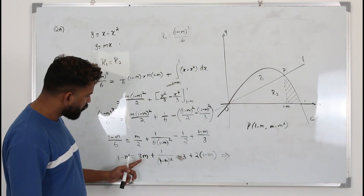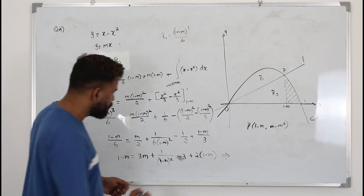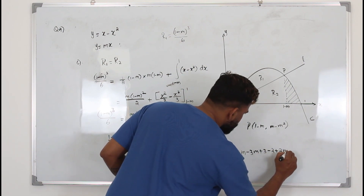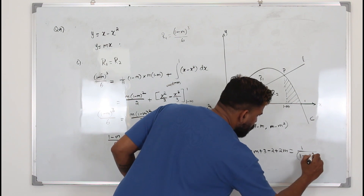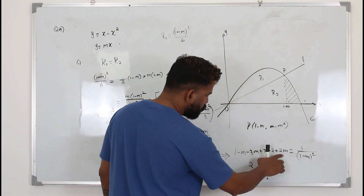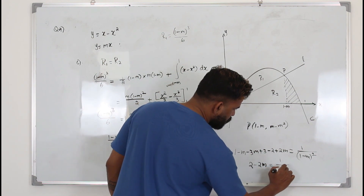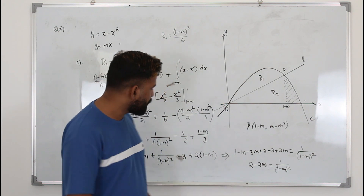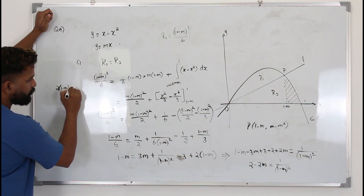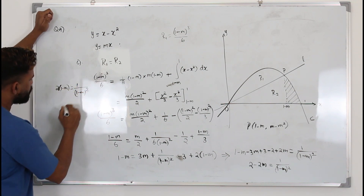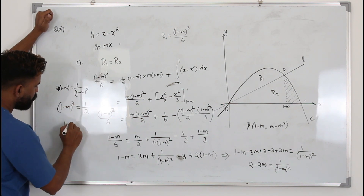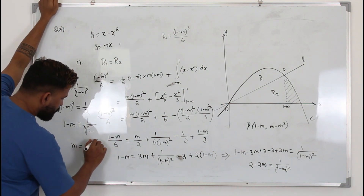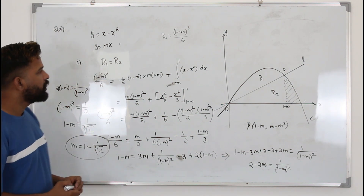Collecting terms: 1 minus m minus 3m plus 3 minus 2 plus 2m equals 1 over (1 minus m) squared. Simplifying: 4 minus 2 equals 2, and 2m minus 2m equals minus 2m, giving 2(1 minus m) equals 1 over (1 minus m) squared. Rearranging: (1 minus m) cubed equals 1 over 2. Taking the cube root of both sides: 1 minus m equals 1 over the cube root of 2, so m equals 1 minus 1 over the cube root of 2.